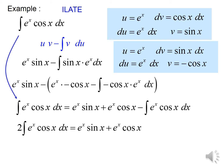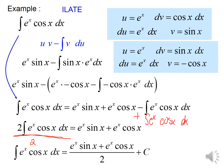Because the two integrals are the same, I'm going to do some inventive math and set what I began with equal to all of this. I can now move the integral to the other side — adding it gives me 2 times the integral of e to the X cosine X dX. To solve for the integral, I simply divide everything by two. That's my final answer.